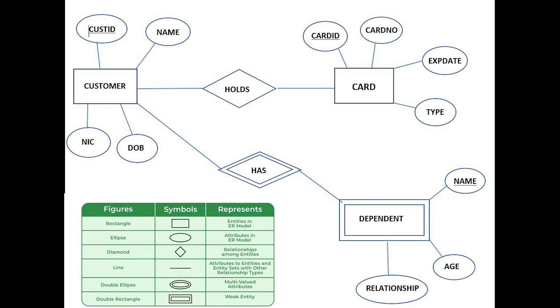If an attribute has double ellipses, it means it's a multi-valued attribute — things like phone numbers or houses, because people can technically have more than one house and more than one phone number, and so on.